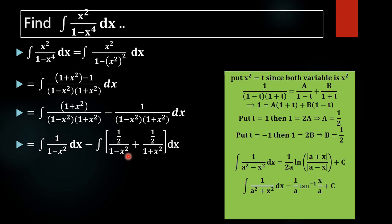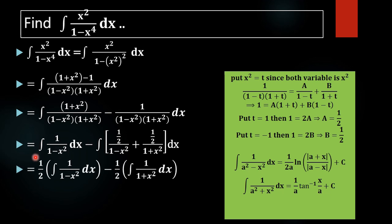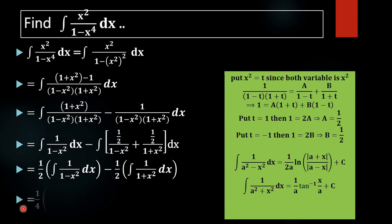That is, one half times the integral of 1 over 1 minus x squared dx, plus one half times the integral of 1 over 1 plus x squared dx. For the integral of 1 over 1 minus x squared, we use the formula: integral of 1 over a squared minus x squared equals 1 over 2a times log mod of a plus x divided by a minus x, plus C. Utilizing this formula we will get log mod of 1 plus x over 1 minus x.